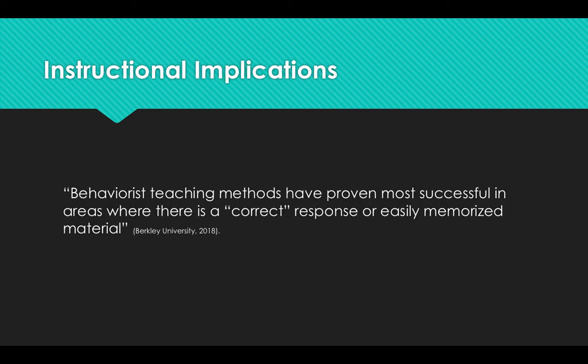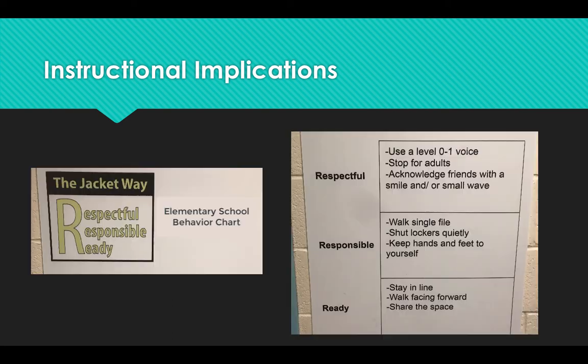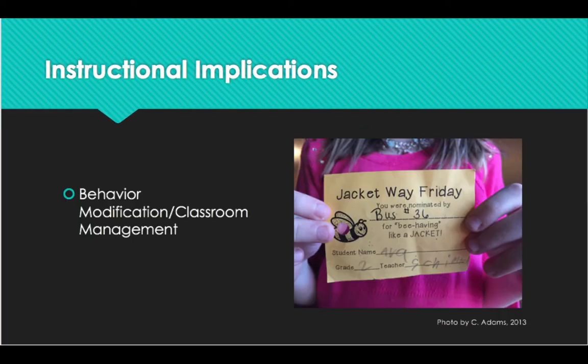So we have seen how behavioral learning theory applies to teaching our canine best friends, but how does this theory work in the human world? Behaviorism is used whenever teachers reward or punish student behaviors to encourage or discourage them from happening again. An example of this might be a behavior chart where students clip up for good behavior or clip down for misbehavior.